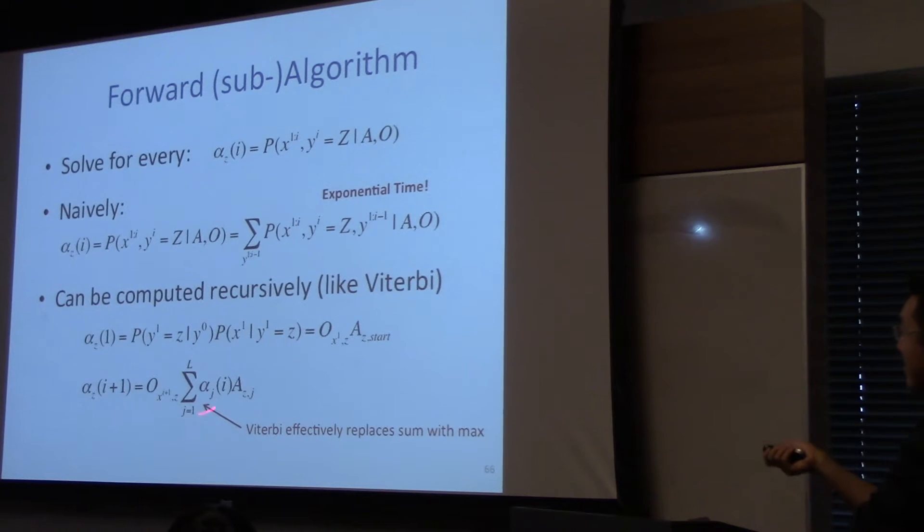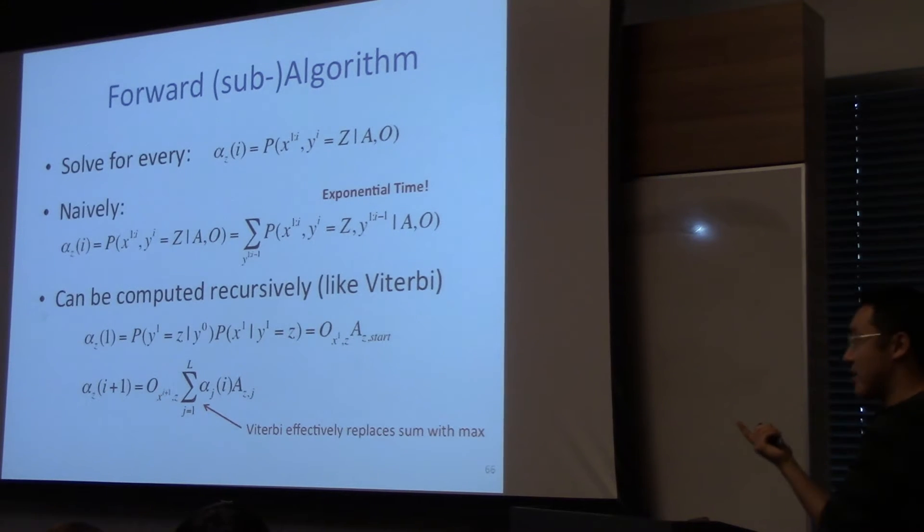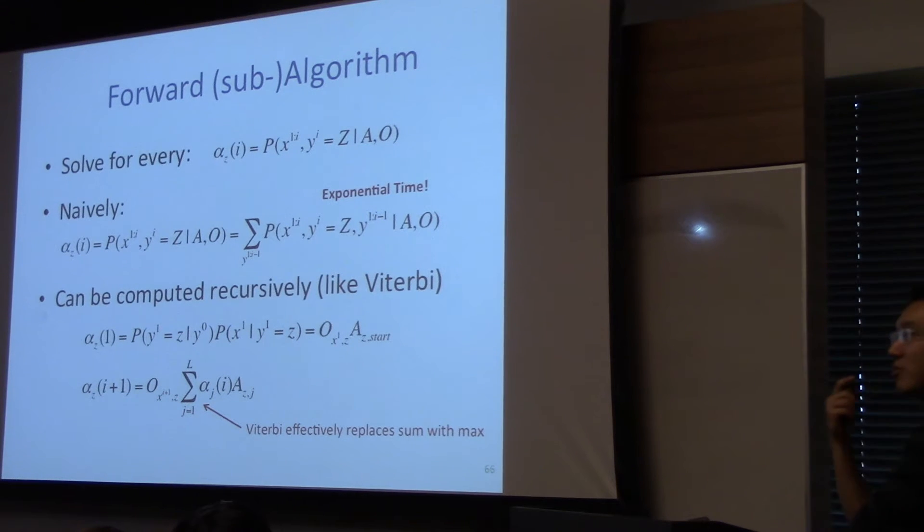And notice that this is a sum, and Viterbi instead of using the sum, it took the max. This is the solution you computed for the previous time step, for the previous iteration of the dynamic programming, and Viterbi chose the max, here I'm looking at the sum. And as a general principle, when you choose the max in these probabilities, you have to take the log of the probability, and as a sum, you have to deal with normalization.